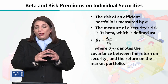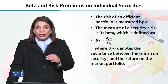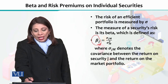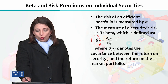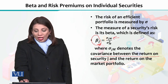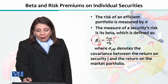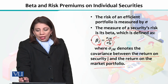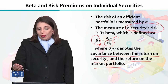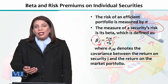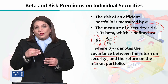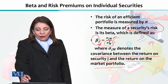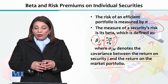So beta gives you the measure of risk. If we try to understand this formula-wise: beta for security J — any individual security we have named J — will be equal to the covariance between the return on security J and the return on the market portfolio, divided by the volatility of the market. This gives you the measure of the risk of that particular security, which we represent as beta. For any security — A, B, C, or any company name — it can be given by simply this ratio of these two values.